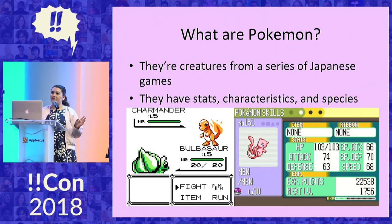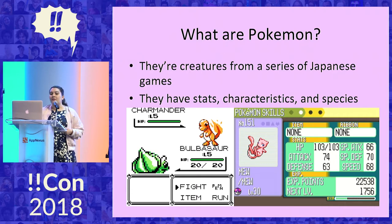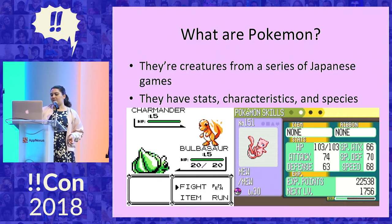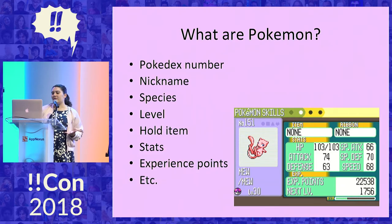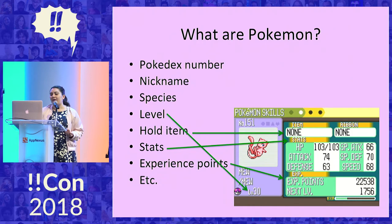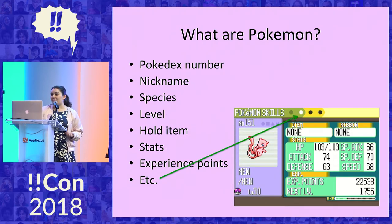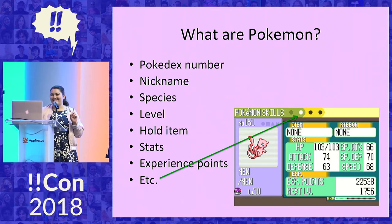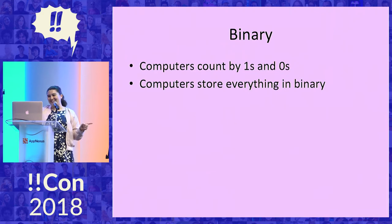So let's get into what Pokemon are and what sort of data is stored in them. Pokemon have stats because they battle each other. They have characteristics and they also have species. You can see here some examples of what that looks like, and here is the UI displaying all the Pokemon's information — there's a lot on here, and there are actually more pages. Now that we kind of know what a Pokemon is, let's look at the actual data structure. I'm going to start on binary, and we're actually going to get into the hex.